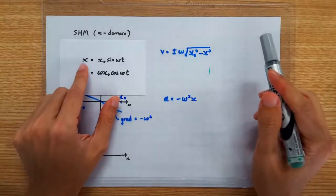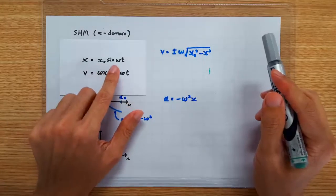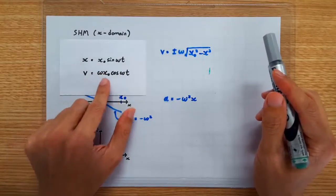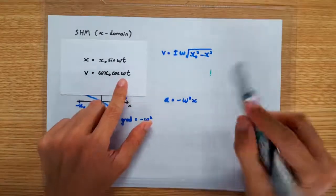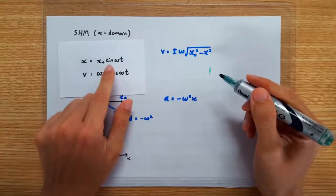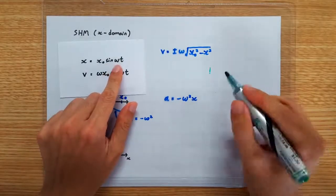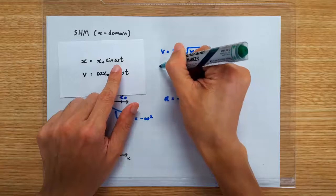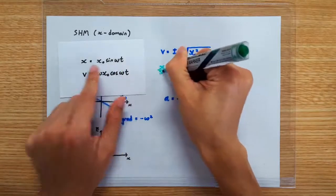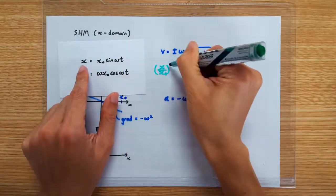Remember if we write X as X0 sin omega t, then V is going to be omega X0 cos omega t. This means that sin square omega t can be written as X over X0 square.